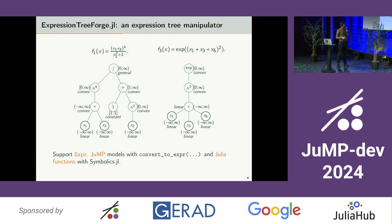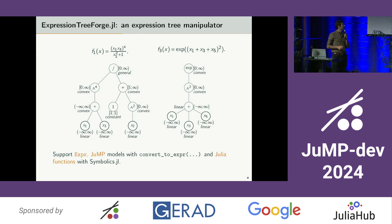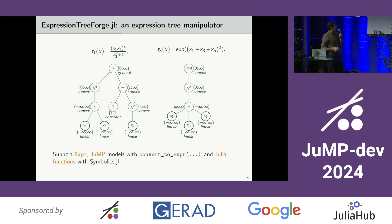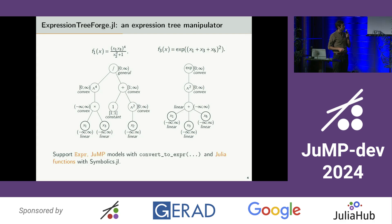The same scheme can be applied to retrieve other values such as inferring bounds or the convexity status for an expression tree. In this case, instead of making only the union between values propagated from the leaves, you apply operator rules at every node. One of the main features of Expression Tree Forge is that it supports several external expression tree formats. For example, it supports the Julia type Expr, and therefore it supports JuMP models with the help of a convert-to-Expr function, as well as Julia functions with Symbolics.